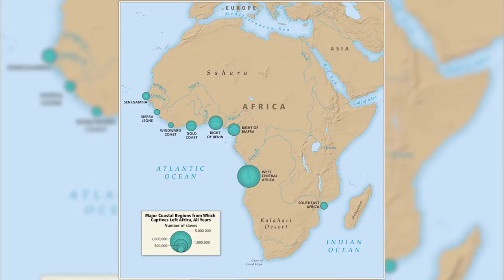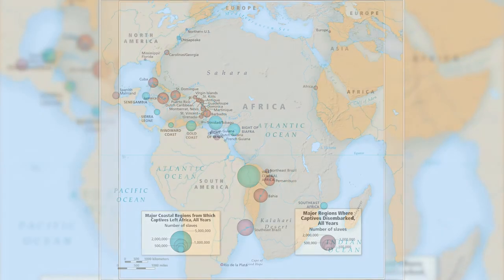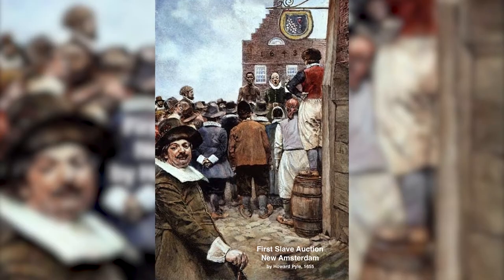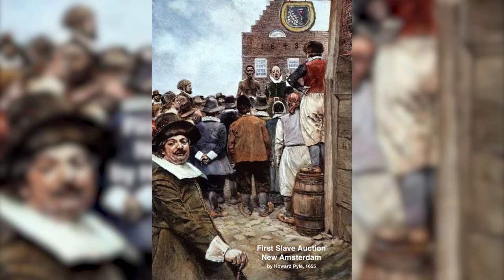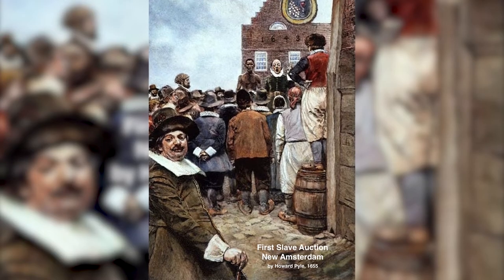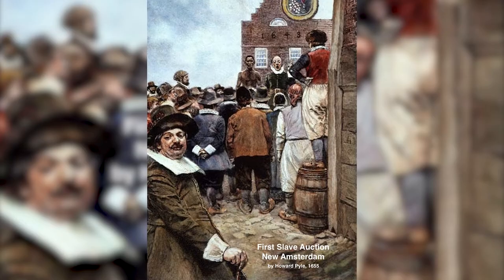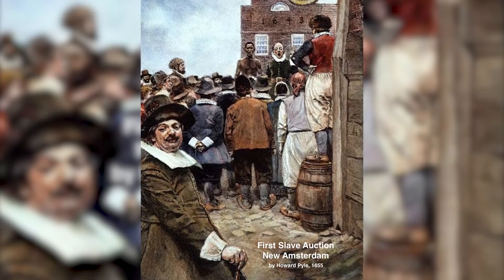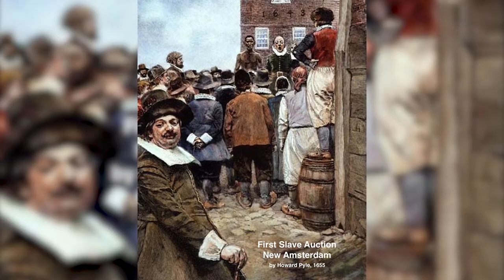The first Africans arrived in the southern colonies in 1619. During the colonial period, approximately 250,000 Africans were forcibly enslaved and brought to the English colonies. The vast majority of these slaves were concentrated in the agriculturally intensive southern colonies, although all of the English colonies allowed and had slaves during the colonial period.